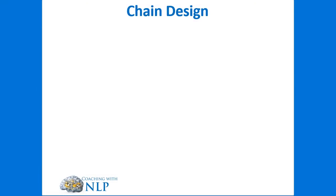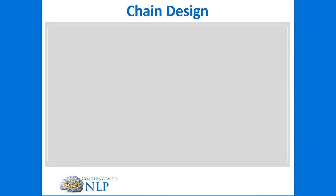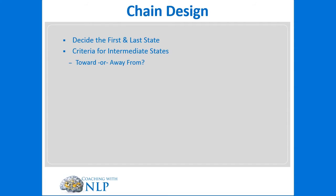We want to design the intermediate states, and there are a few requirements. Some important things to consider when we design the chain: we need to understand what the first and last states are — where the client currently is and where they want to end up. So procrastination is the first state and motivation is the desired state. Then we consider criteria for the intermediate states.